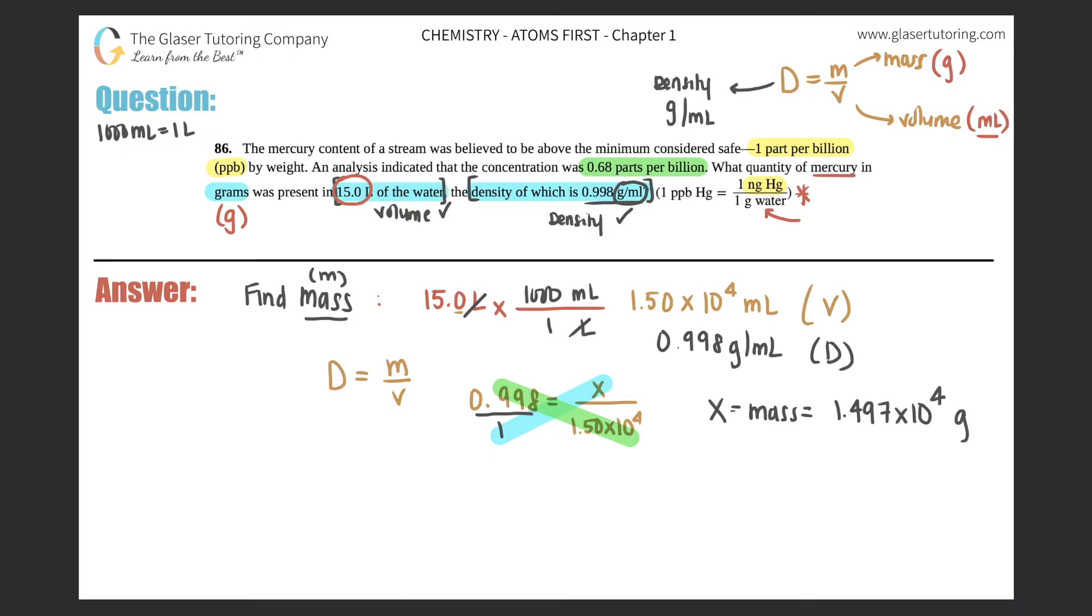Now, if we want to do sig figs here, we would only need three sig figs. So 1, 2, and 3. The 7 though, however, would round the nine into a 10. So that would make this a five. So 1.50 times 10 to the fourth grams. So we're going to have to use this. And now this is grams of the water.